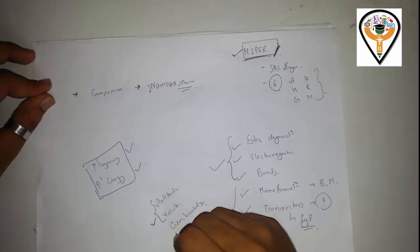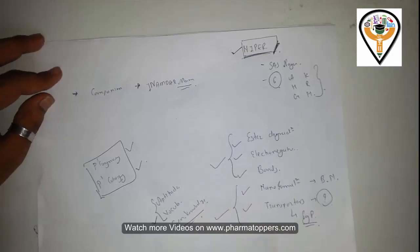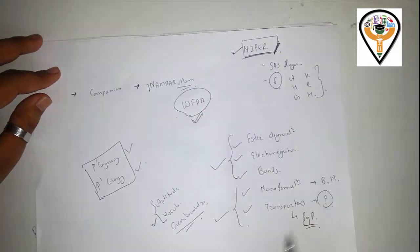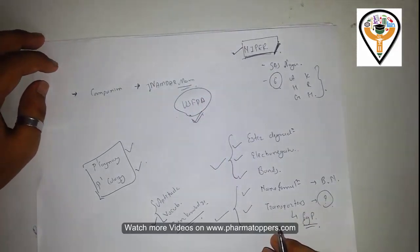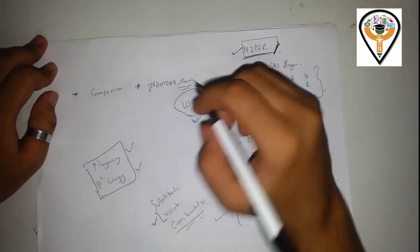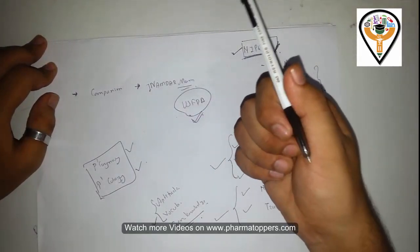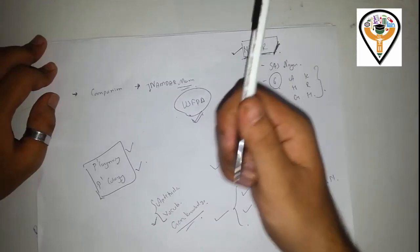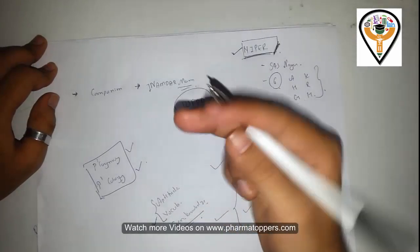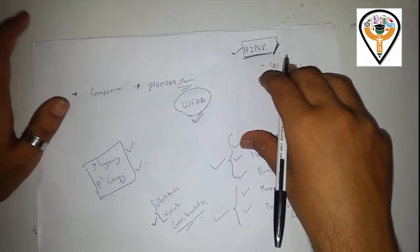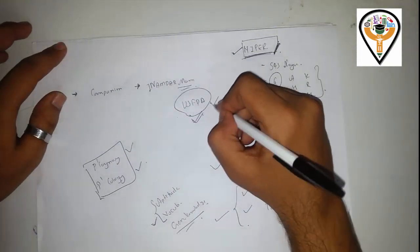I would like to recommend you go with the USFDA website. In this USFDA website, you will find one tab where you can find recently approved drugs. This helps you because generally one or two questions are there on recently approved drugs in the NIPA examination. You can confirm one question just by watching these drugs.